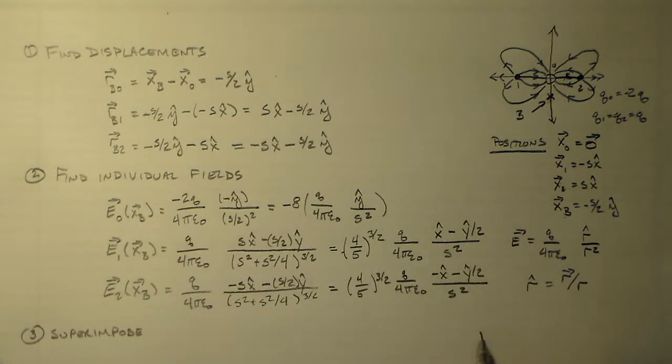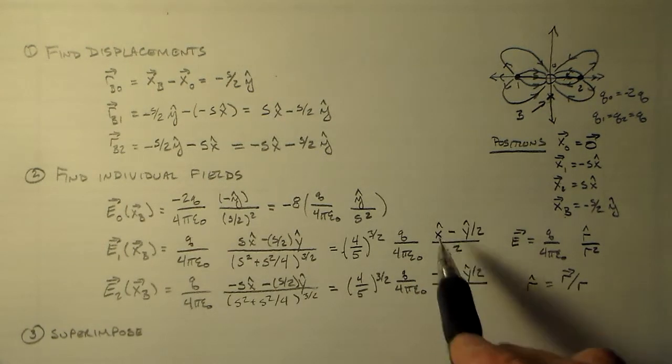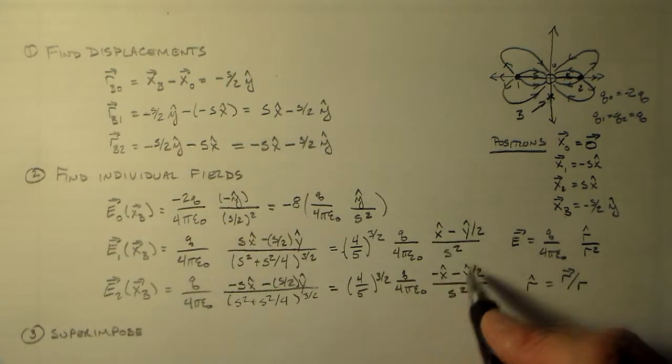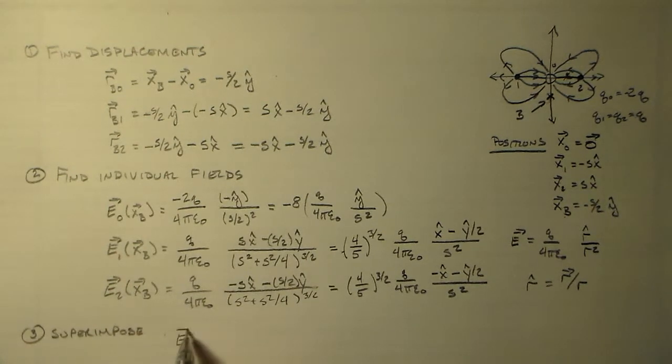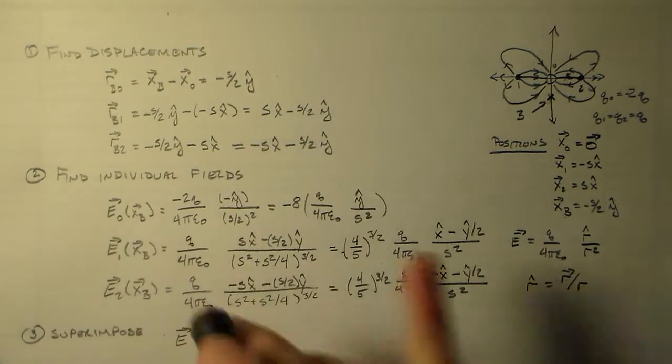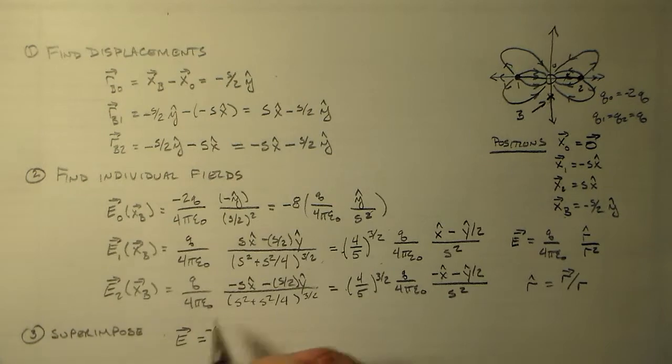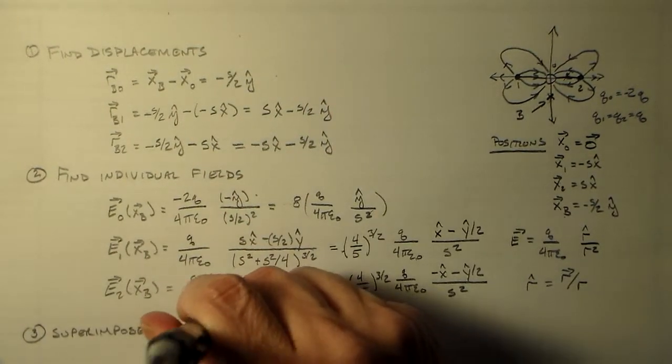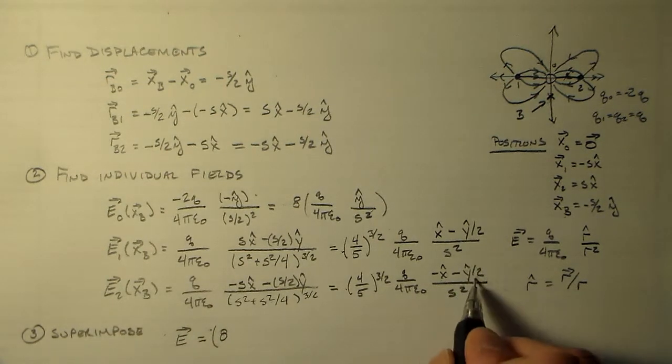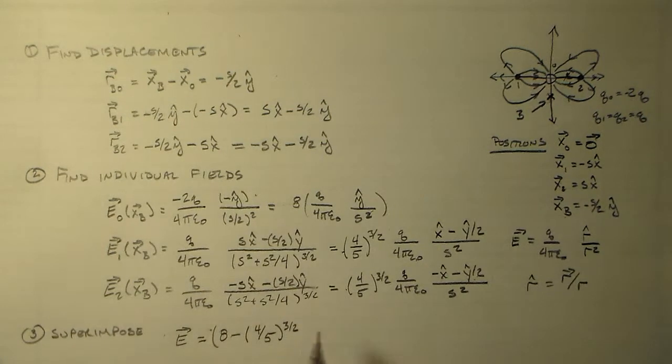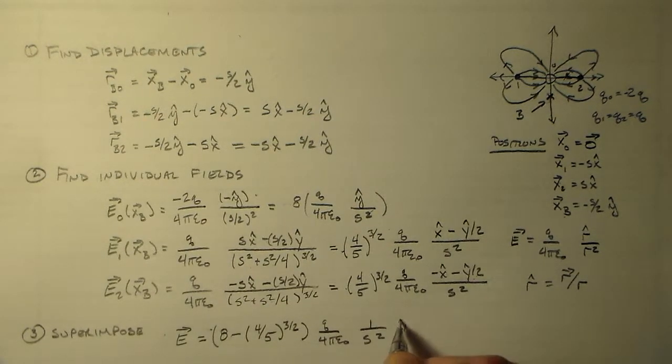Now in the y hat direction, we just have to, we can just add everything up, but in the x hat direction, you'll notice that this and this are additive inverses, right? This x is minus that, and everything else is the same, so they cancel. So all of the force is actually in the y direction, all right? So e is going to equal - let's see - so that's negative, is that negative? Oh actually, there are two negatives, that should be positive, but I'm sorry. So good, good, so we have 8 minus, these two are going to add together, right, so we just have a y hat, so we have 8 minus 4 fifths to the 3 halves, q over 4 pi epsilon naught, 1 over s squared, in the y hat direction, okay?